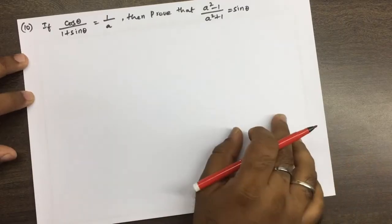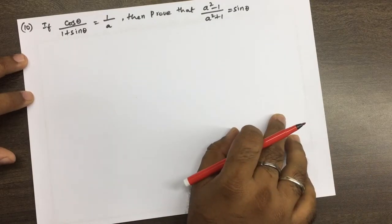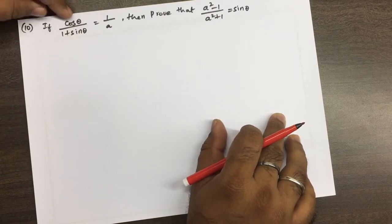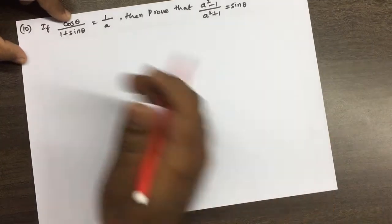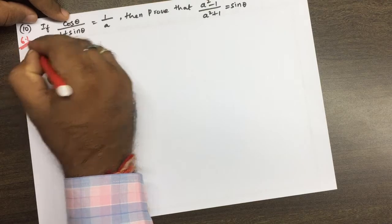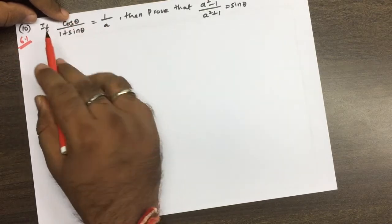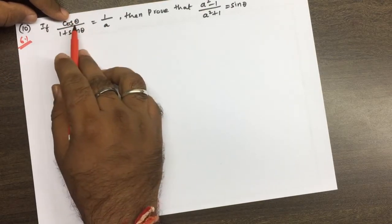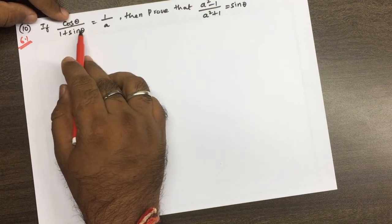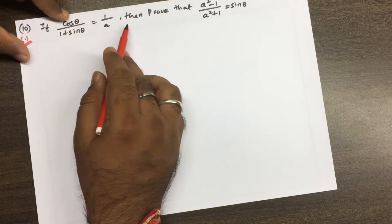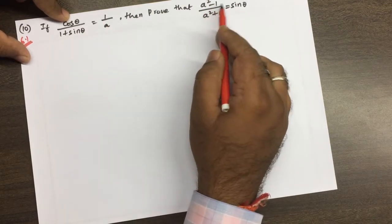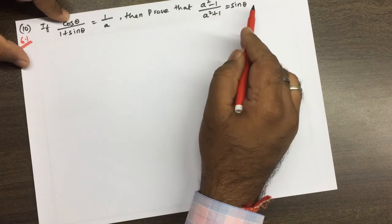Welcome friends, welcome to Maxwell's GM Sir channel. In exercise 6.1, we have the 10th problem: if cos θ / (1 + sin θ) equals 1/a, then prove that (a² - 1) / (a² + 1) equals sin θ.